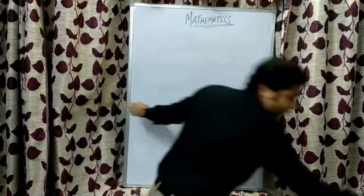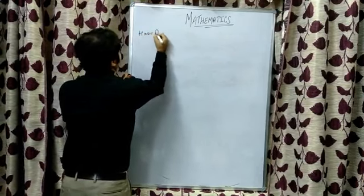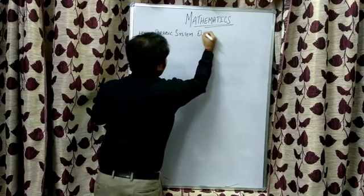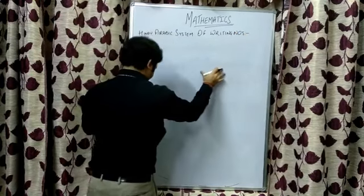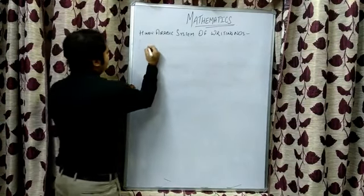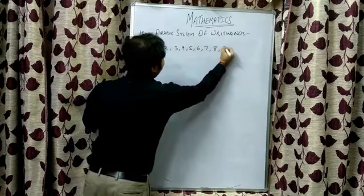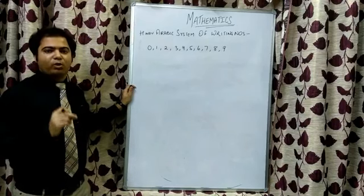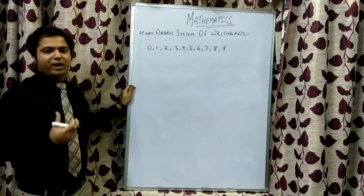We will be dealing with the Hindu-Arabic system. In the Hindu-Arabic system of writing numbers, we have 10 symbols, namely 0, 1, 2, 3, 4, 5, 6, 7, 8, and 9. Each symbol is termed as a digit. And when a group of digits denotes a number, they are altogether termed as a numeral.